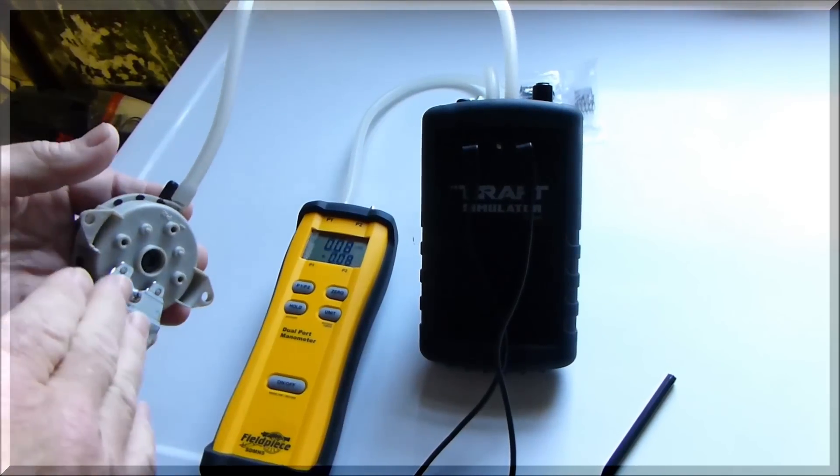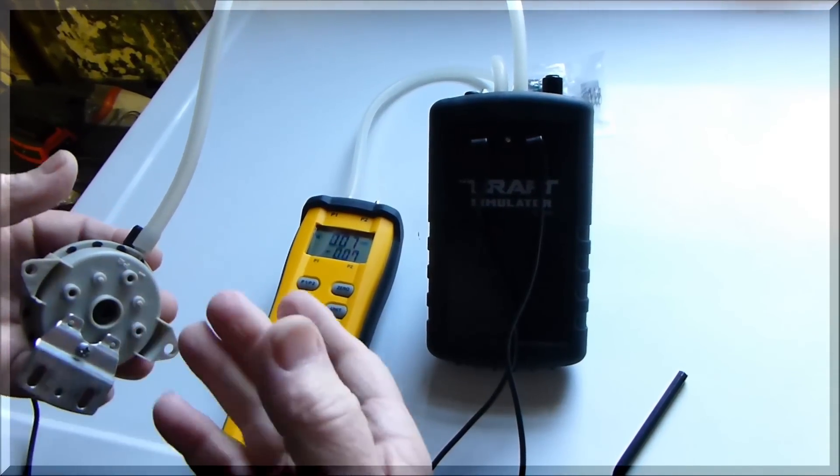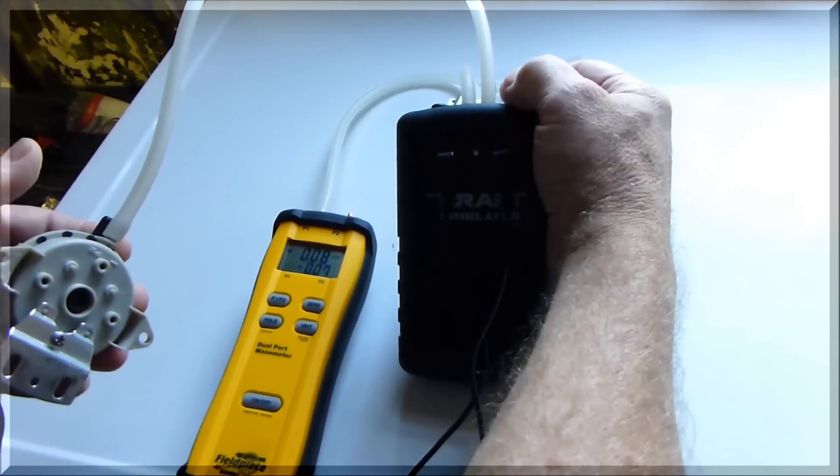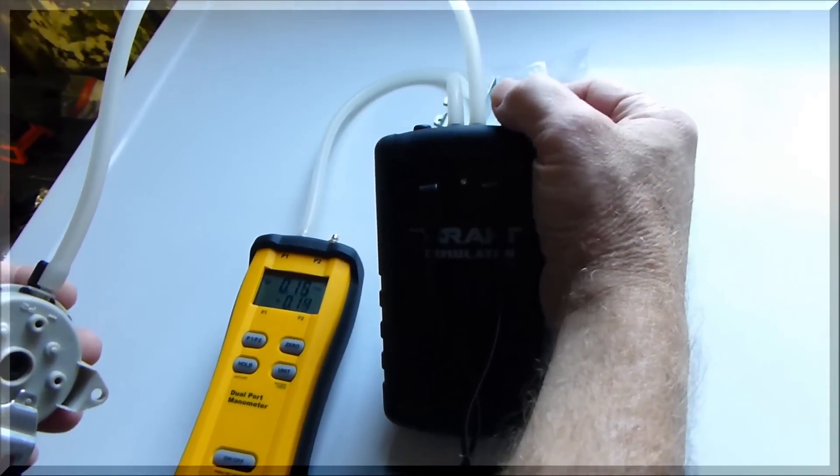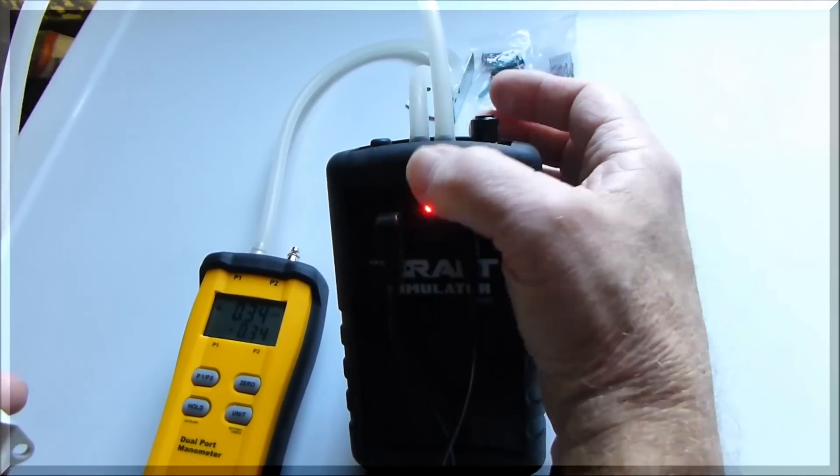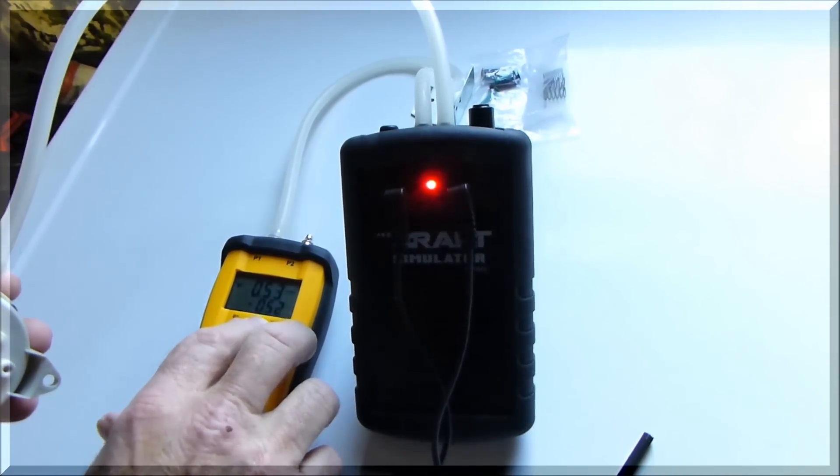Now since we're calibrating this, we're going to adjust our pressures up to where we want this to go. We're going to turn this in clockwise to change the pressure to the reading that we want it to be. Notice the LED came on, doesn't matter at this point. We're going to take this up to a .80.